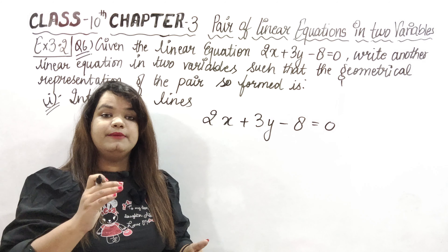So, for intersecting lines, we need to make an equation such that the geometrical representation of both — the given equation and the new equation we will make — forms intersecting lines. When do intersecting lines form? When a1 upon a2 is not equal to b1 upon b2. Let me make it clear. The equation form is ax plus by plus c is equal to 0. For the first equation, I write a1x plus b1y plus c1. For the second equation, I write a2x plus b2y plus c2 is equal to 0.